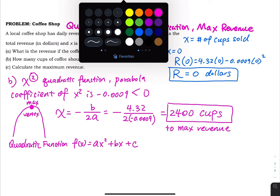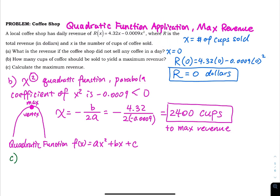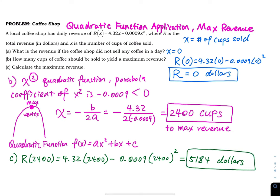That will be part C. In part C, when x equals 2,400, we have R(2400) = 4.32 times 2,400 minus 0.0009 times 2,400 squared. This gives us $5,184. This is your maximum revenue.